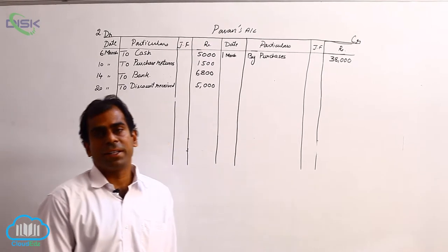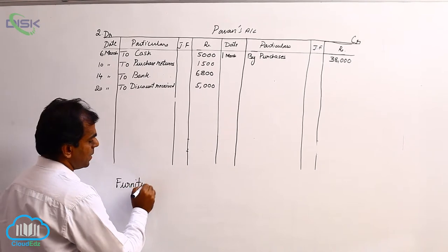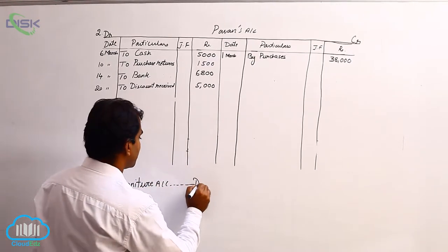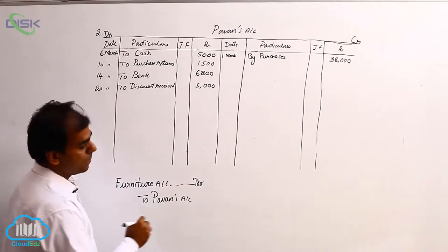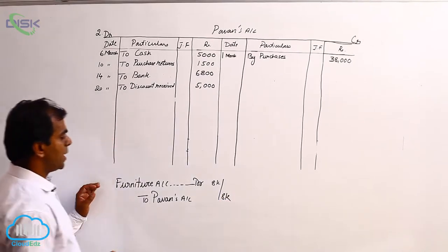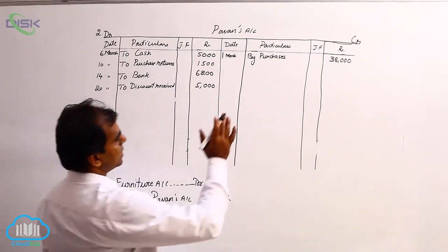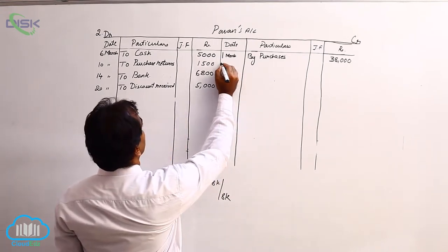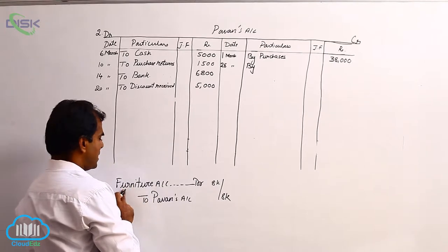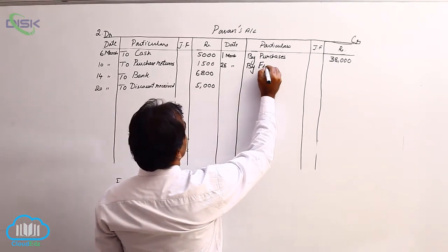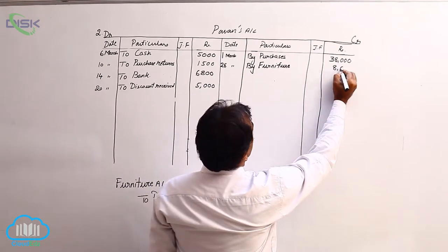The last transaction is furniture purchased from Pavan. Furniture is a real account, so debit what comes in — furniture account is debited. Pavan is the giver or supplier, so credit the giver — Pavan's account is credited. The amount is eight thousand. As per this journal entry, we are crediting Pavan's account, so go to Pavan's account, go to the credit side, give the date 28th. The reason we credited Pavan is we purchased furniture, so write 'furniture' in the particulars column and enter the amount on the credit side.